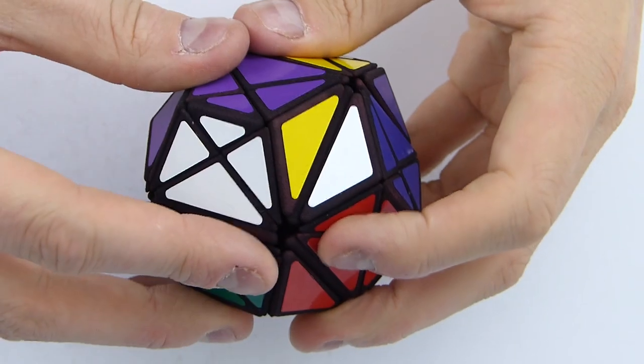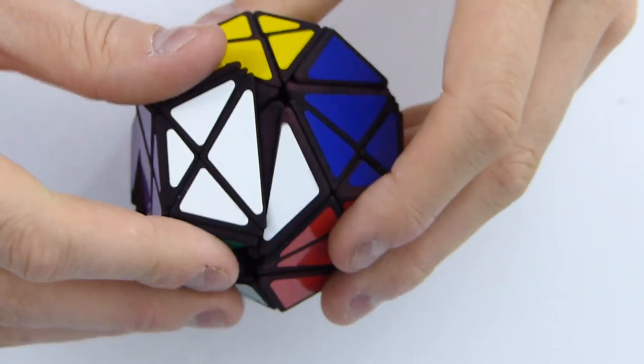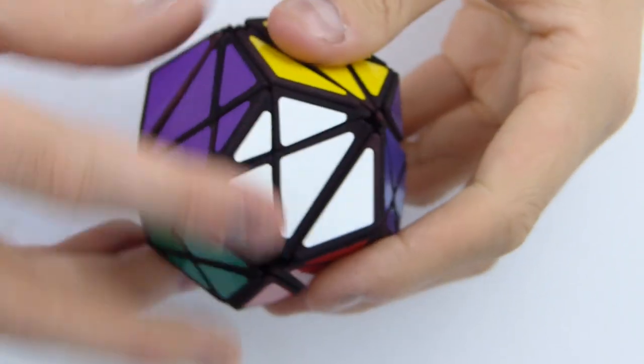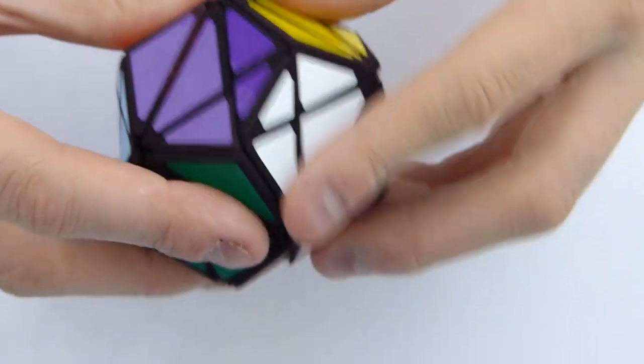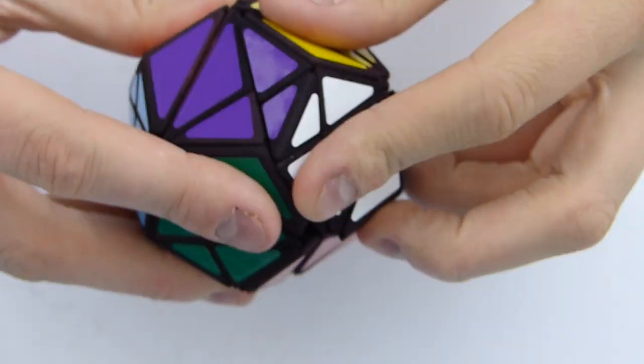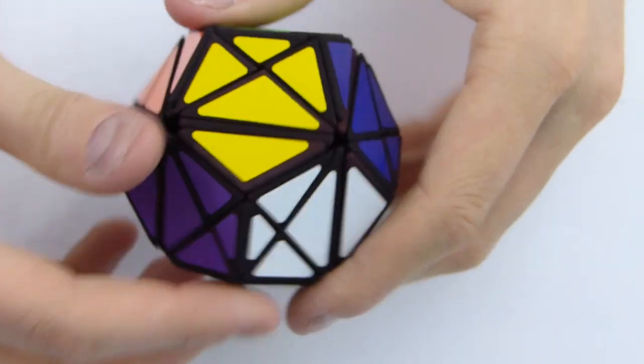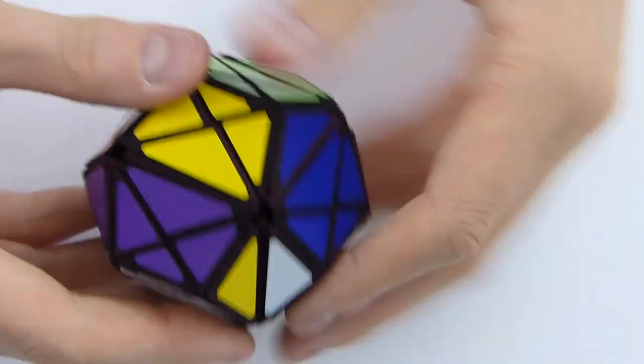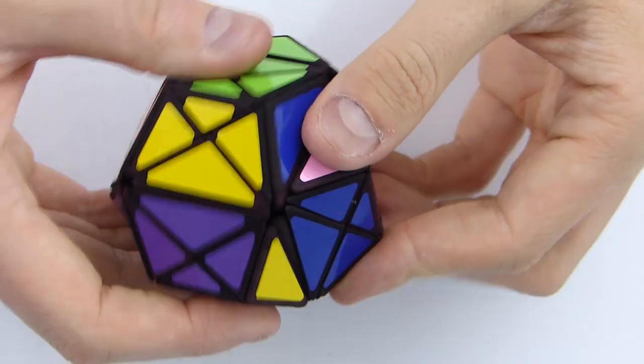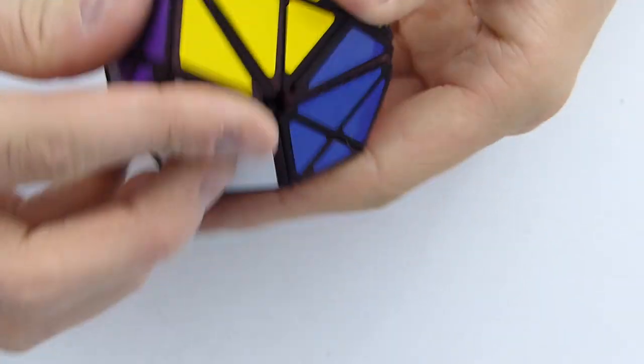Well, simply put, what this puzzle is, technically, is a face-turning octahedron. This is just a simple face-turning octahedron, and it's crossed with these types of turns that are, well, equivalent to corner-turning octahedron.